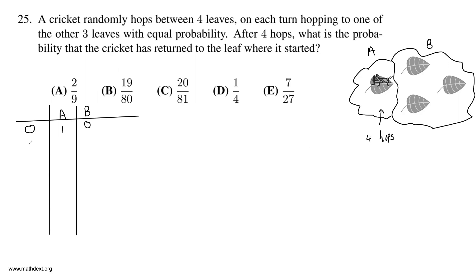After one hop, what's the probability that the cricket is in state A? Well, if the cricket was on its initial leaf after zero hops, it's going to have to hop to a different leaf. The cricket might go to any other leaf, but it will never be in state A because it moved away from its initial leaf. So the probability that the cricket is in state A is zero, and the probability it is in state B is one.